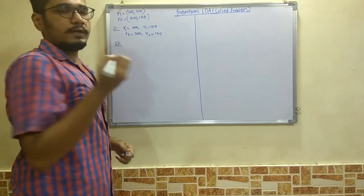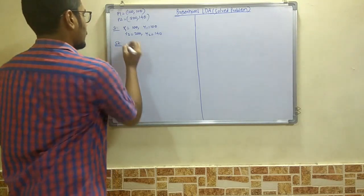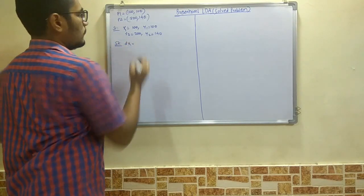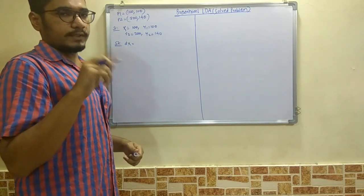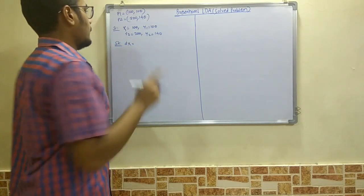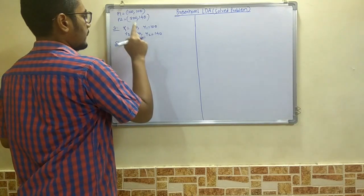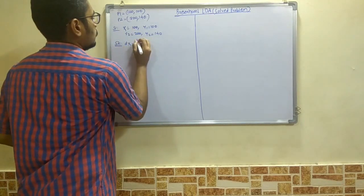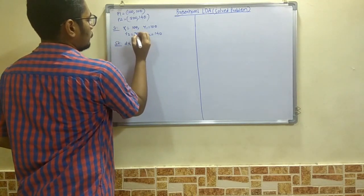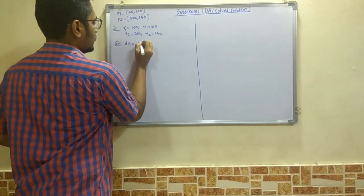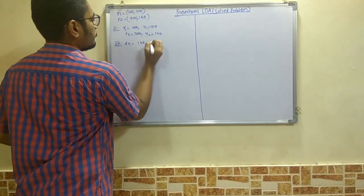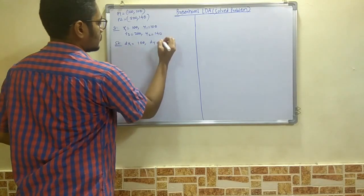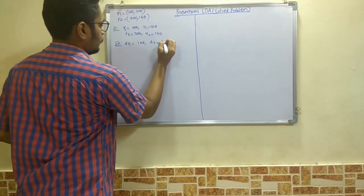Next, we calculate dx and dy. The formula for dx is mod of (x2 minus x1) and dy is mod of (y2 minus y1). So dx = |200 - 100| = 100, and dy = |140 - 100| = 40.